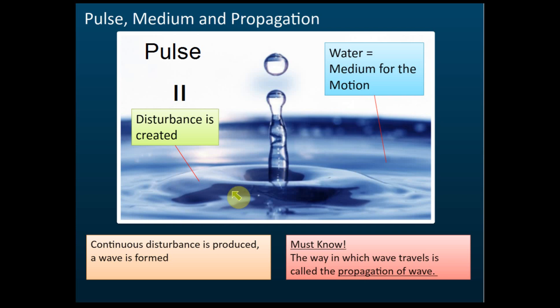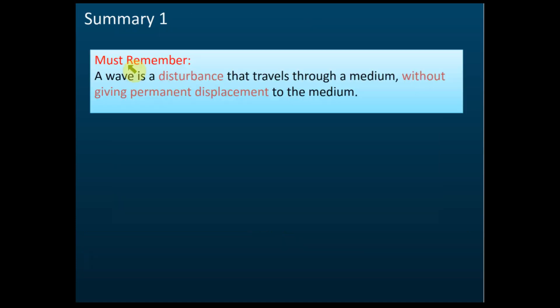Students often ask: what does propagation mean? Propagation is the motion of the wave — how the wave moves. So to summarize: a wave is a disturbance that travels through a medium without giving permanent displacement to the medium.